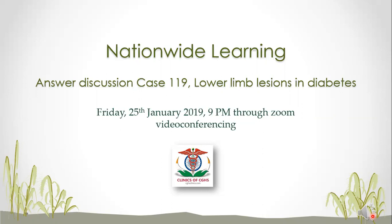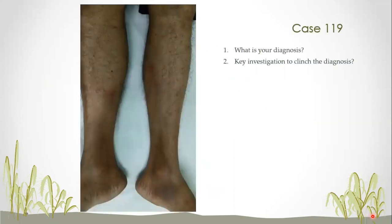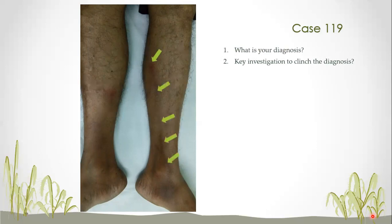We are going to discuss a lower limb lesion of a young diabetic who is not well controlled. If you closely look at the picture of the lower limbs, you'll see these lesions marked out with yellow arrows.